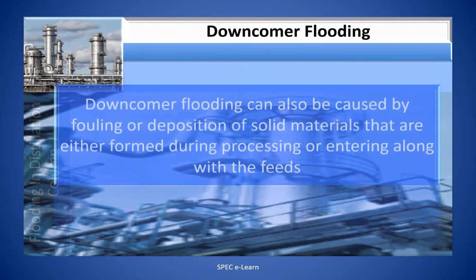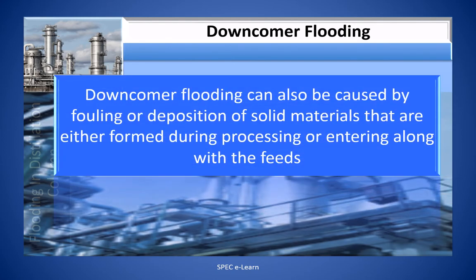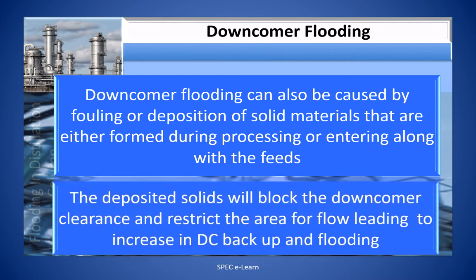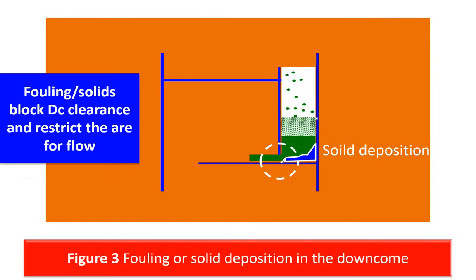Downcomer flooding can also be caused by fouling or deposition of solid materials that are either formed during processing or entering along with the feeds. The deposited solids will block the downcomer clearance and restrict the area for flow, leading to an increase in downcomer backup and flooding. The deposition of solids is demonstrated in this figure — close to the downcomer apron or the downcomer bottom clearance, a solid deposition has occurred (shown in blue), which will restrict the liquid flow to the tray below.